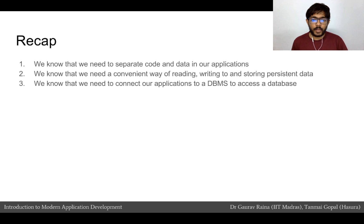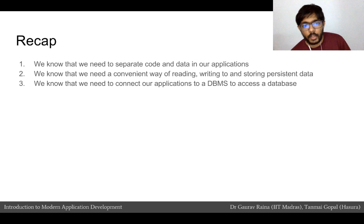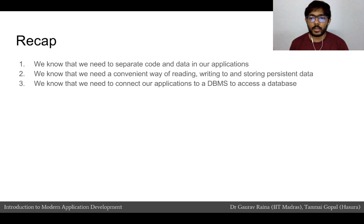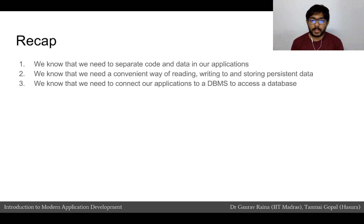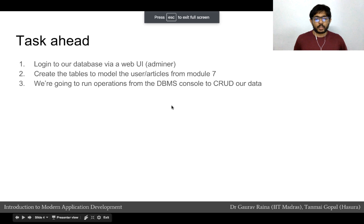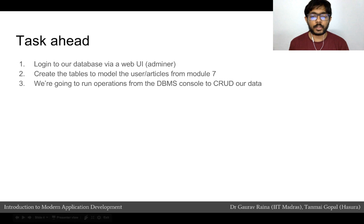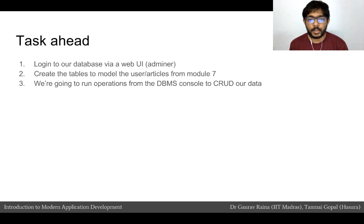To quickly recap what we have learnt so far: we have learnt that we need to separate code and data in our applications. We have also learnt that we need a convenient way of reading, writing, and storing persistent data into what we call a database. Applications that allow us to do this easily are called DBMSs. We are going to log into a database via a web app and via the management console app called Adminer, create the tables that model the user and articles from the last module, and then run some common operations on our data.